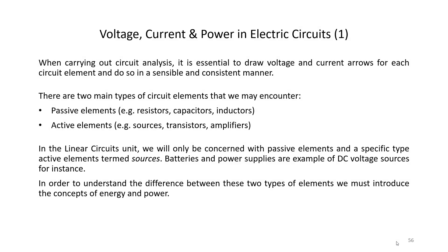In electric circuits there are two main types of elements: passive elements and active elements. Passive elements absorb energy — for example, resistors dissipate energy as heat, while capacitors and inductors store energy in an electric or magnetic field respectively. Active elements are elements that produce power. We will mostly be looking at sources, such as batteries or benchtop power supplies. To understand the difference between these two types of elements, we must introduce the concepts of energy and power.